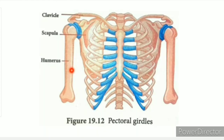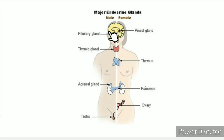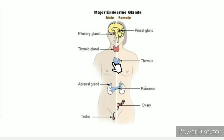The pituitary gland is located in the head. The thyroid is butterfly-shaped. The thymus is in the chest. The pancreas is in the abdomen. The adrenal glands are also in the body.